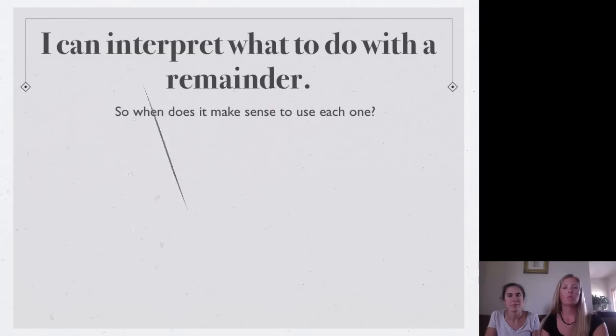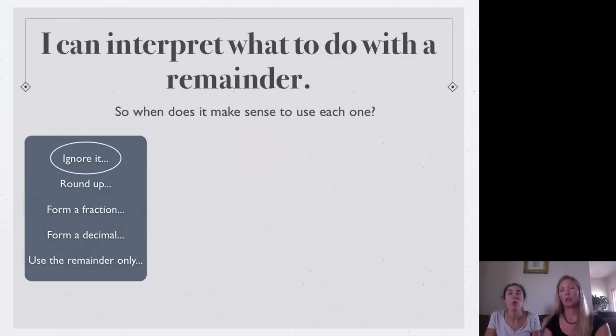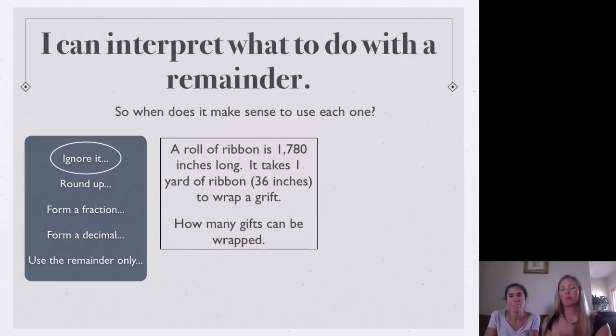So the first one is ignoring it. So when would you actually get to ignore the remainder? Because that sounds like it would be really nice, right? So here's an example. A roll of ribbon is 1,780 inches long. It takes one yard of ribbon or 36 inches to wrap one gift.